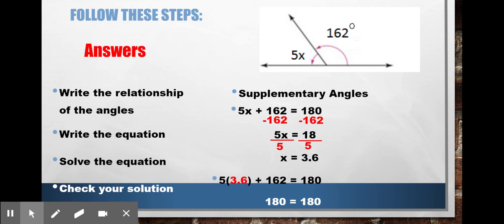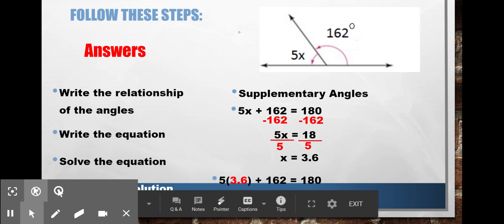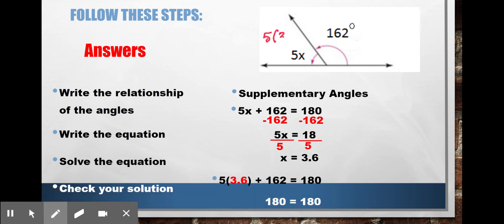I'm going to do 5 times 3.6. 5 times 3.6 should be 18, and it is. So that means this angle is 18 degrees.